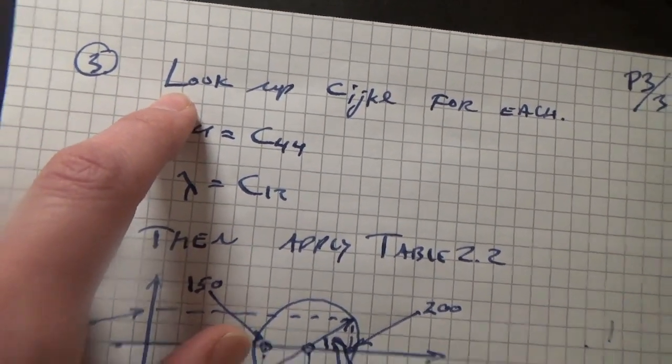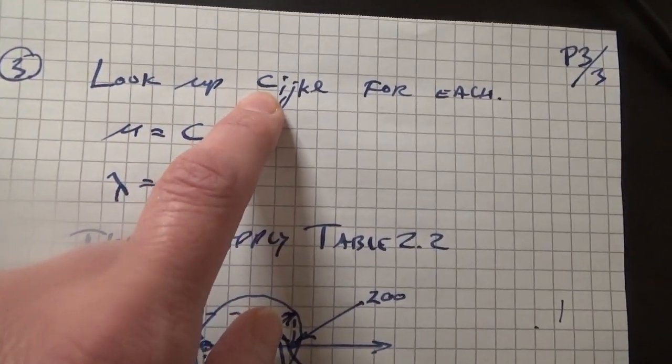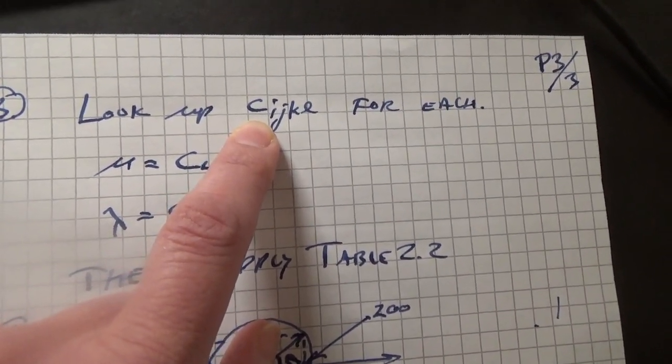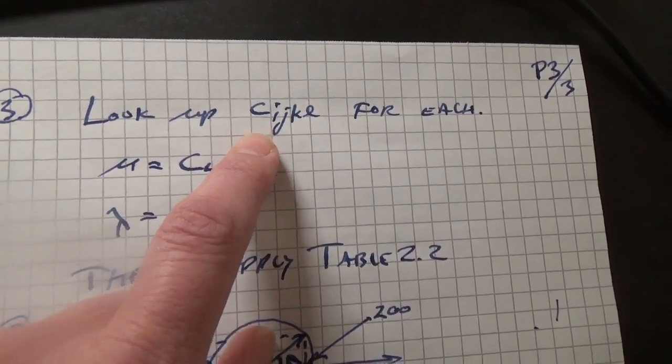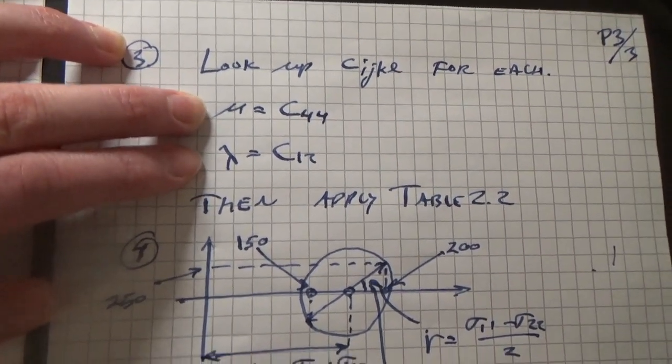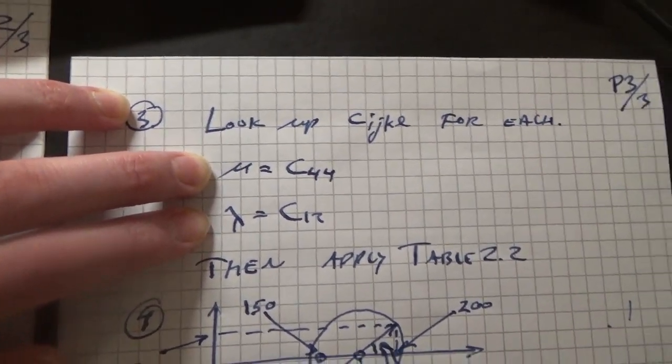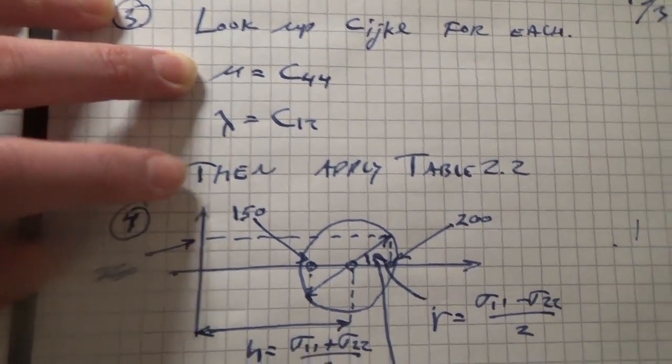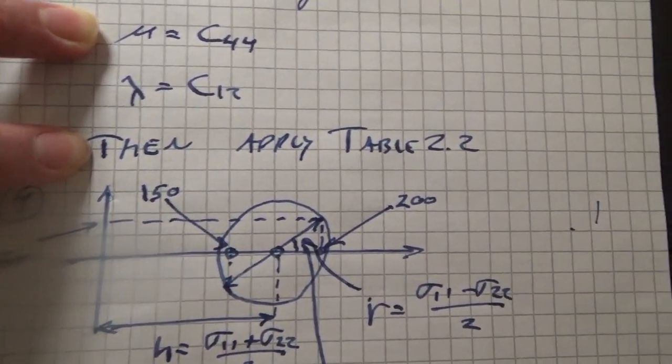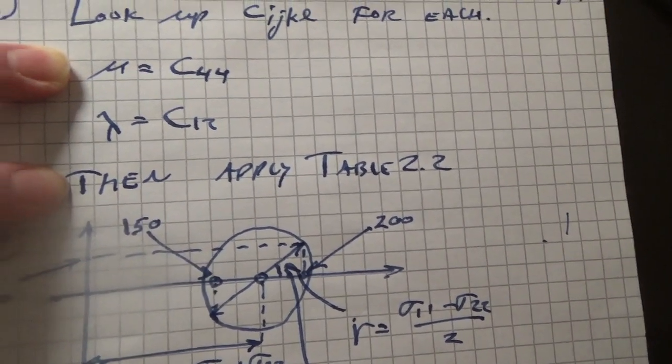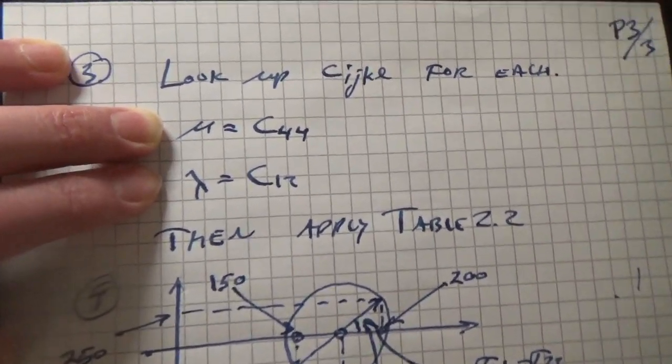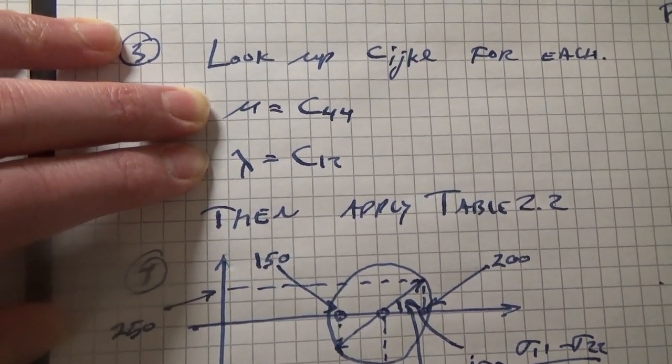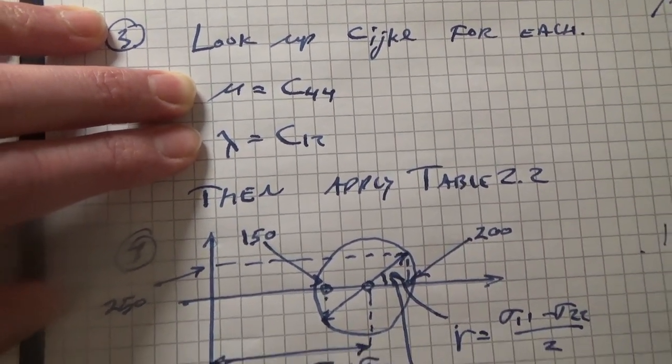Problem three is really about looking up the i j k l for each, and there is a table in your textbook. If not, you can find sources online. We know that the bulk modulus is c44 and the Lame constant is c12, and your textbook has table 2.2 which gives you a whole series of transformations within the isotropic elastic constants. So you can use that to transform it.